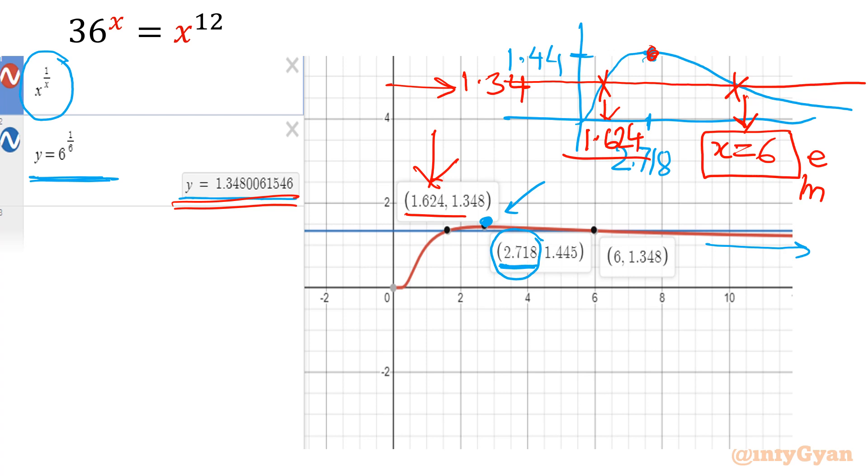So our final result is x is equal to 6, one intersection, one solution. And second one is using Lambert W, 1.624. I hope you liked this video. Thank you so much for watching. Do not forget to like, share and subscribe. Bye bye till next video.